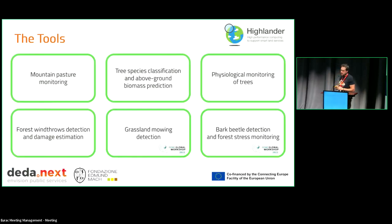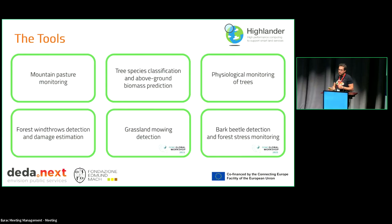There are six different situations that could benefit from a monitoring tool: monitoring the availability of mountain pasture, monitoring different tree species and their biomass, monitoring the physiological characteristics of single trees, identifying forests with wind throws and estimating the damages, and identifying mowing activity on grassland.